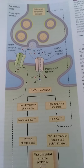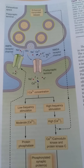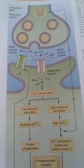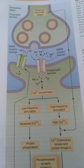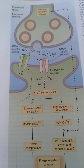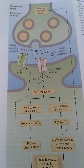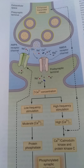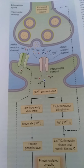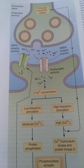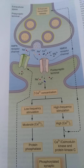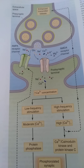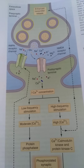Today let us discuss about synaptic plasticity — the long-term potentiation and long-term depression. Long-term potentiation has very well been studied between the CA3 and CA1 neurons in the Schaffer's collaterals in the hippocampus.